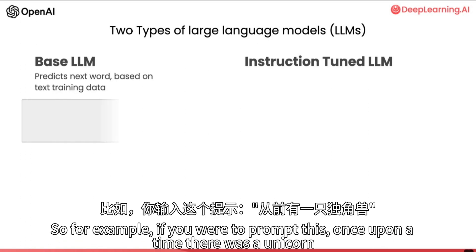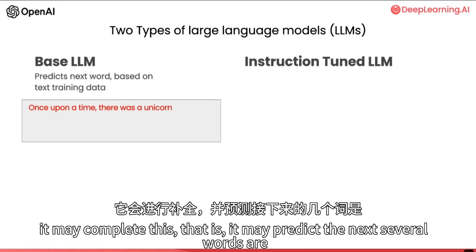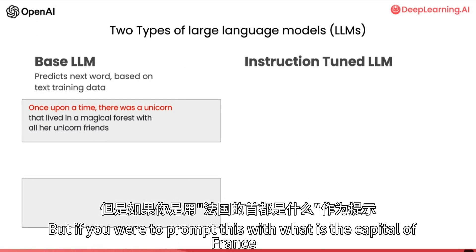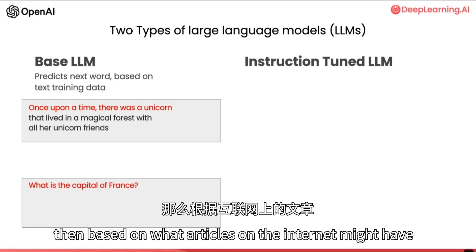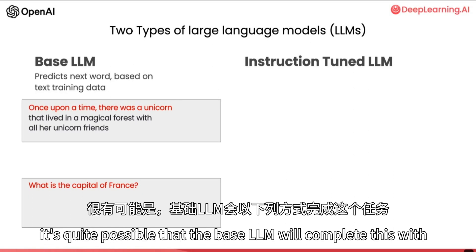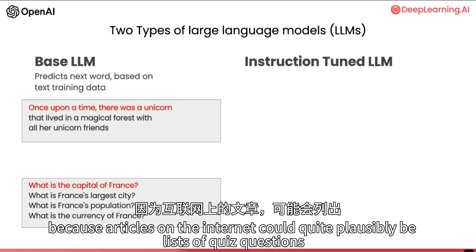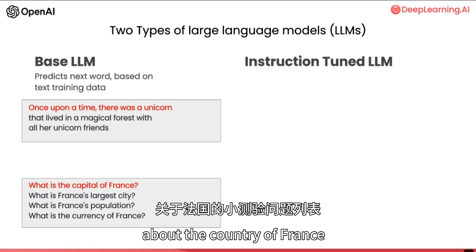For example, if you were to prompt a base LLM with 'once upon a time there was a unicorn,' it may complete this by predicting the next several words as 'that live in the magical forest with all unicorn friends.' But if you were to prompt it with 'what is the capital of France,' based on what articles on the internet might have, it's quite possible the base LLM will complete this with 'what is France's largest city, what is France's population,' and so on — because articles on the internet could plausibly be lists of quiz questions about the country of France.